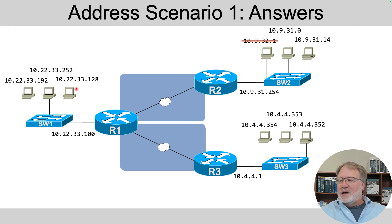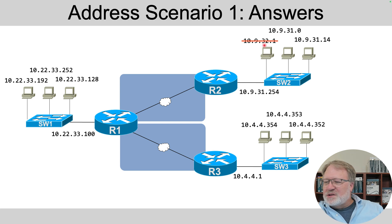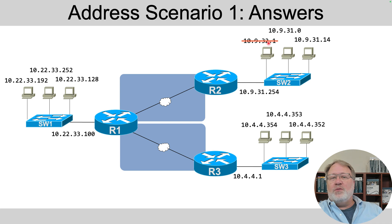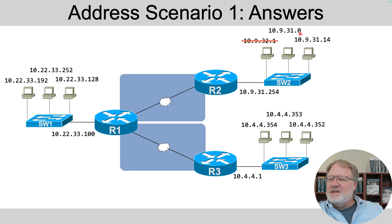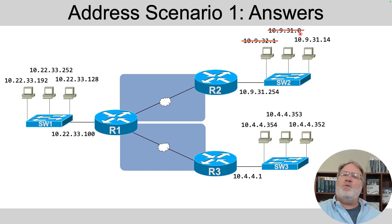At the upper right, we've got 10.9.32.1. Notice the 32 in that third octet. With these simplest cases with a slash 24 mask, it's the first three octets that need to be the same. 10.9.31 versus 10.9.32 — that's different, so it's an address in a different subnet. This next one, 10.9.31.0 — that's the subnet ID in that subnet. When using a slash 24 mask, the subnet ID ends in 0, so that's a reserved value.